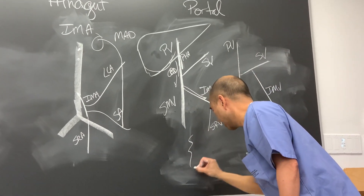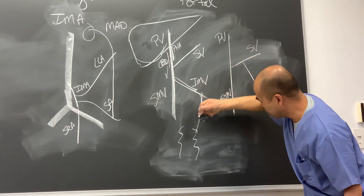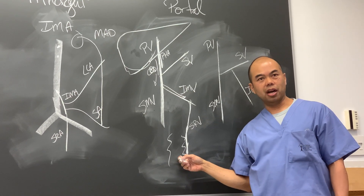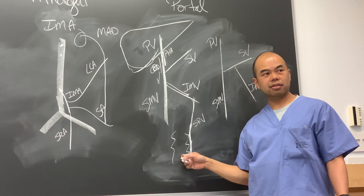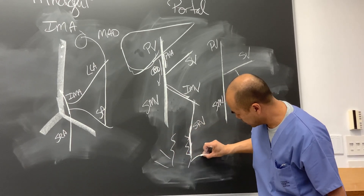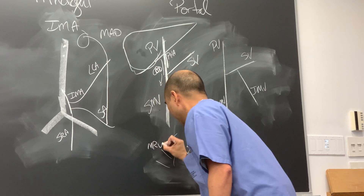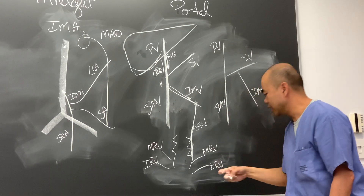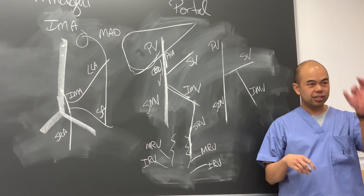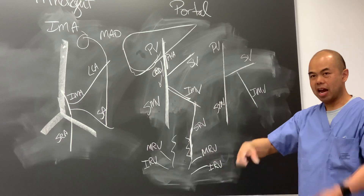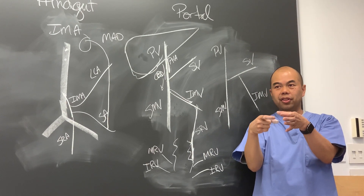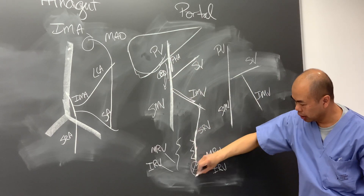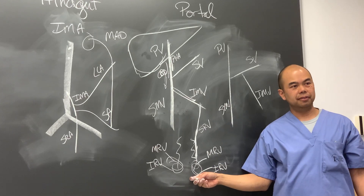The superior rectal vein is a huge vein. The rectum also receives cable blood supply, which means it drains via cable veins - the middle rectal vein and inferior rectal vein on both sides. These cable veins are very small. If a large volume of portal blood pours down into this region, it pools where the large superior rectal vein meets the tiny cable veins - that's internal hemorrhoids.